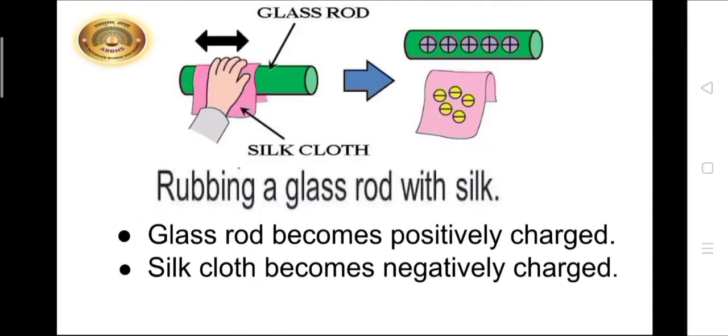If we rub an end of a glass rod against a silk cloth, glass loses negative charge and silk grabs the negative charge from the glass atoms. So after rubbing, glass rod becomes positively charged and the silk becomes negatively charged, as you can see here.